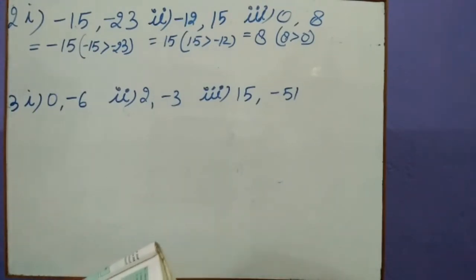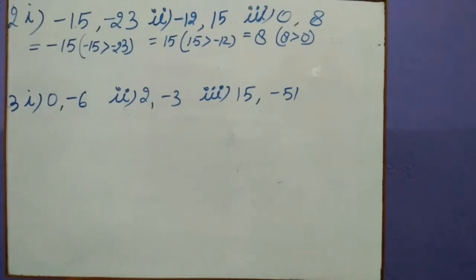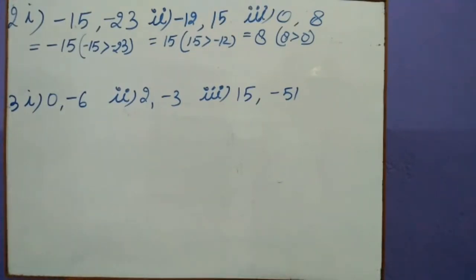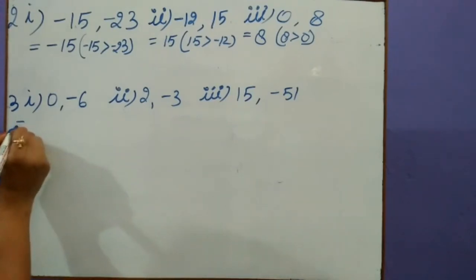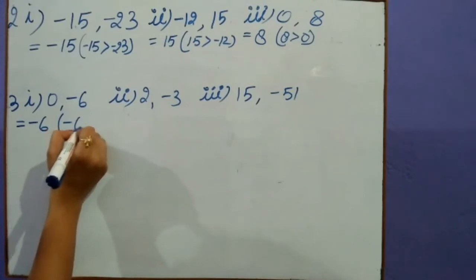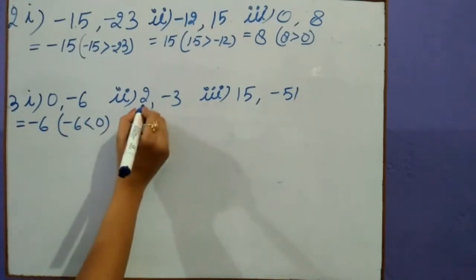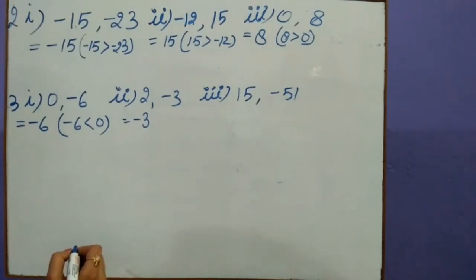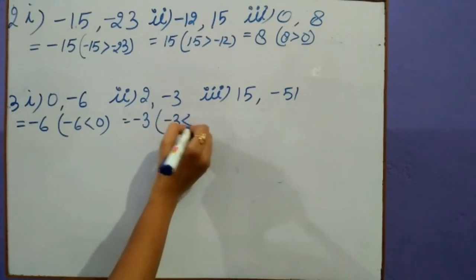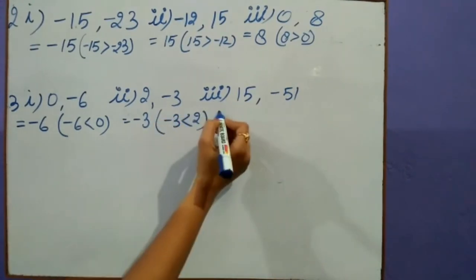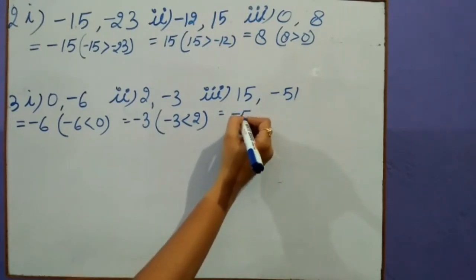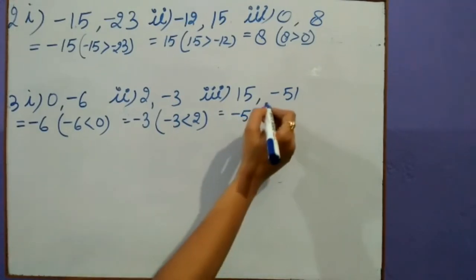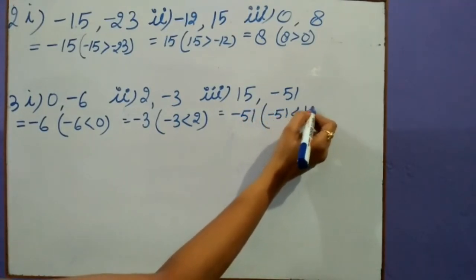Question number 3: In each of the following pairs, state which integer is smaller. We have to find out the smaller integer. First one: 0 and minus 6 — we know that minus 6 is less than 0, so our answer is minus 6. In this pair, minus 3 is less than 2, or minus 3 is smaller than 2. In the third: 15 and minus 51 — minus 51 is smaller than 15.